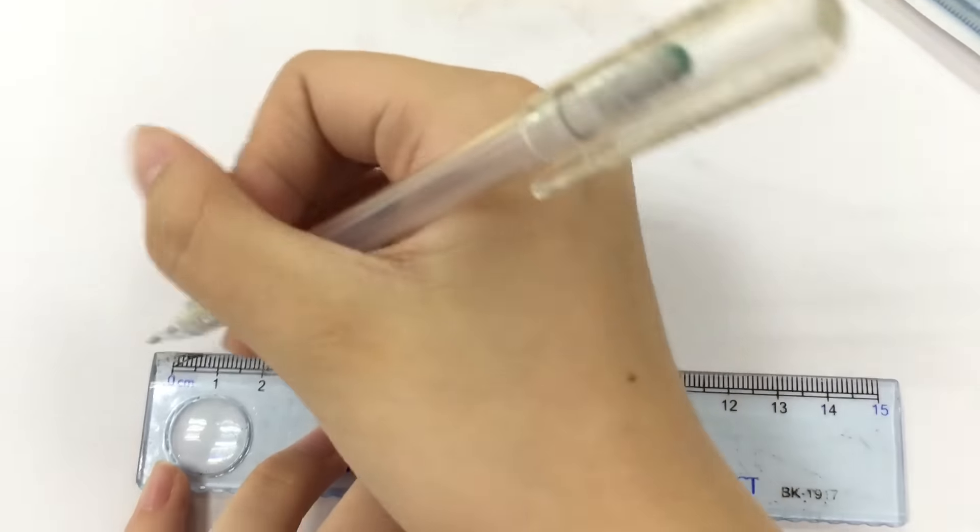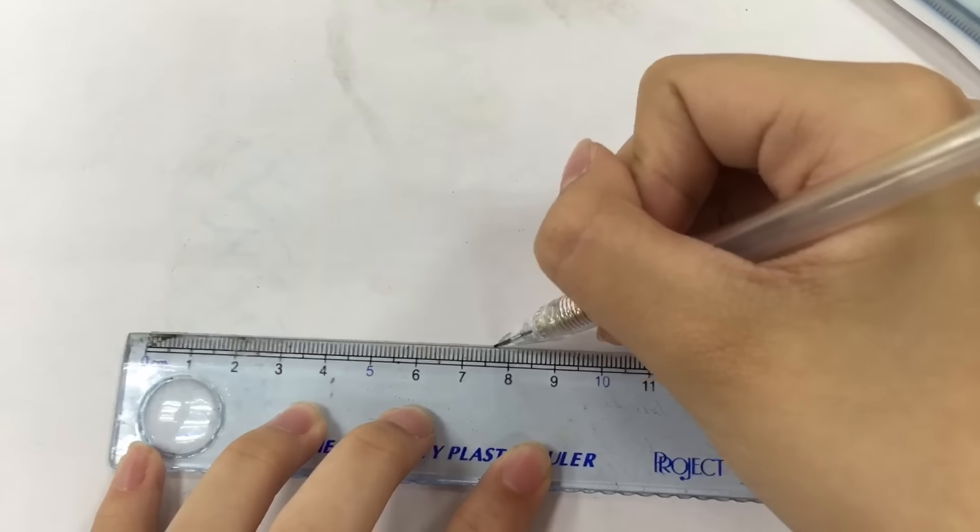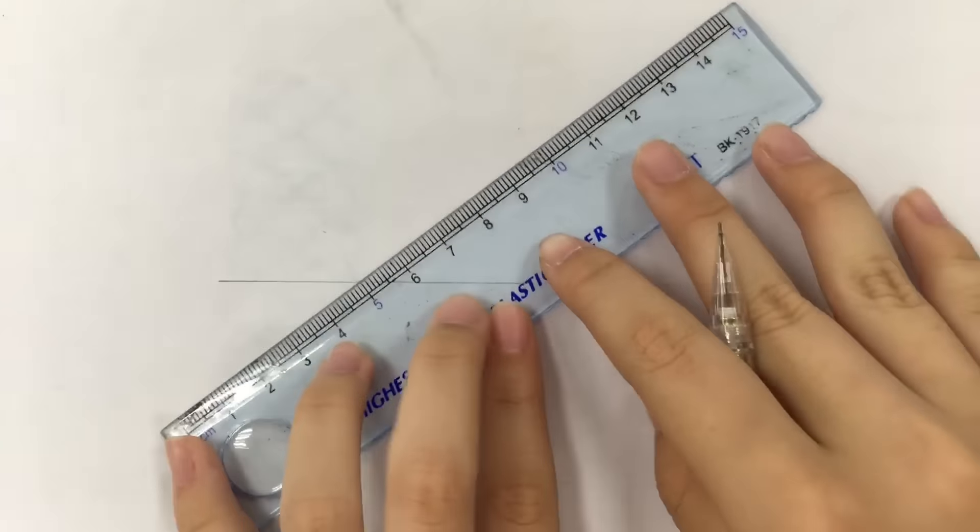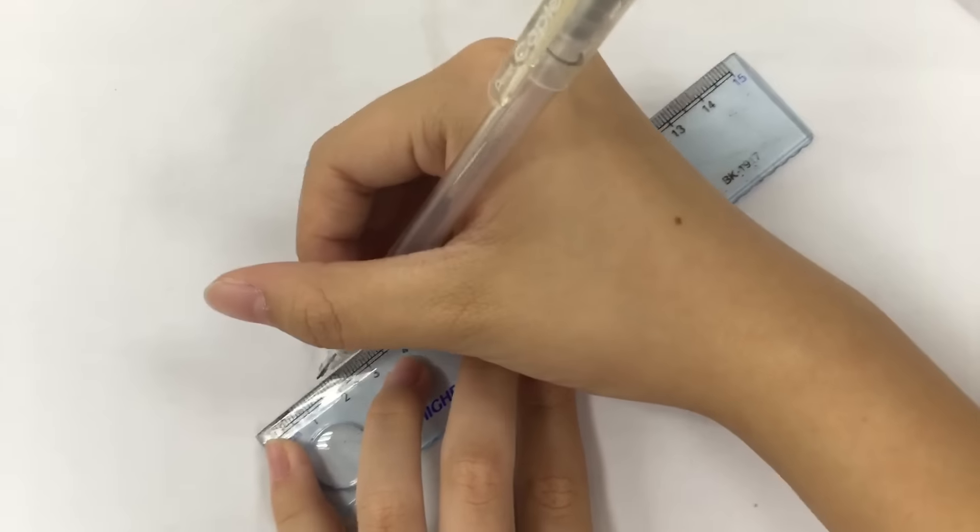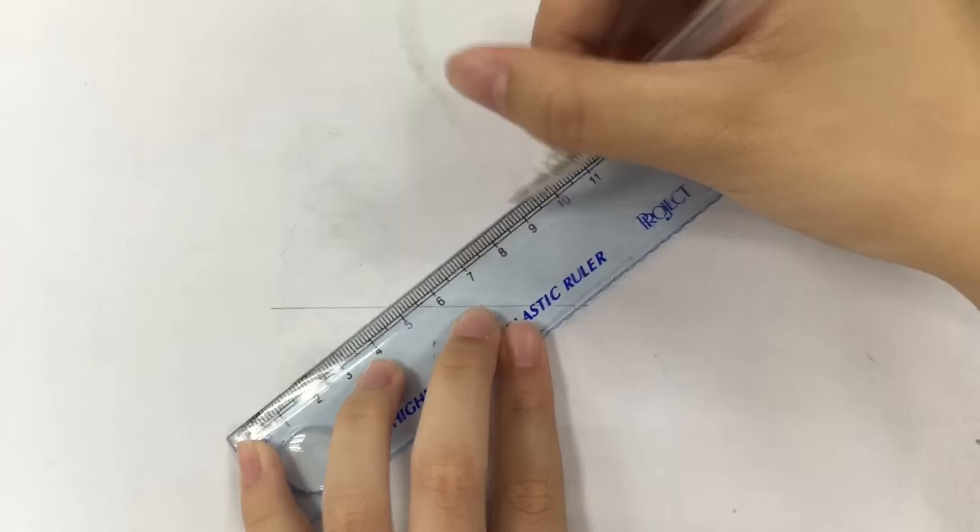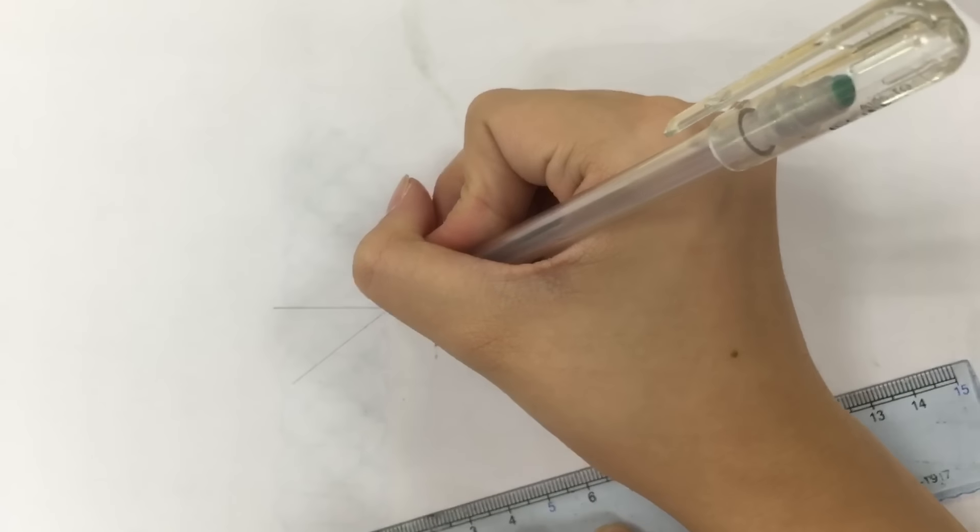First, you need to draw a line with any measurement. Now, we construct another line that will intersect the first line in any angle and then put a point on it.